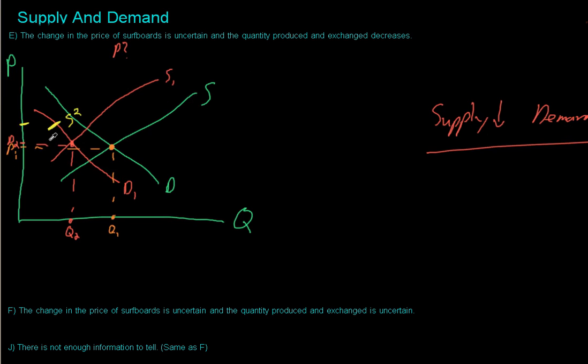So we can't tell what will happen to the price when supply is decreasing and demand is decreasing, but we will know that the quantity will always go down from Q2 to Q1. Cool. See you in the next video.